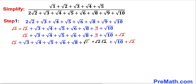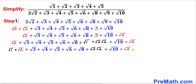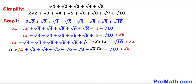Everything else is the same. Now in this next step we are going to move this square root of 1 all the way to the very beginning. If we look very closely we can see that the first five terms — square root of 1 plus square root of 2 plus square root of 3 plus square root of 4 plus square root of 5 — are the same as the numerator. Therefore we are not going to mess with these first five terms and I am going to put them in parentheses. Now we are going to manipulate the next five terms.